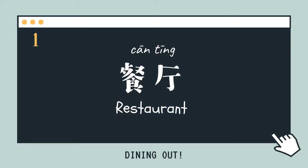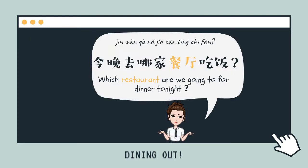餐廳 — restaurant. 餐廳. Today's lesson is about dining out. 今晚去哪家餐廳吃飯? Which restaurant are we going to for dinner tonight?